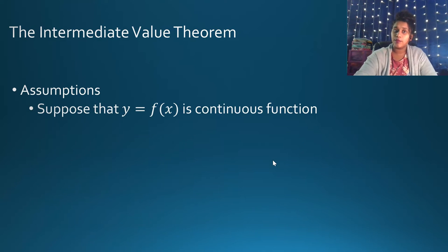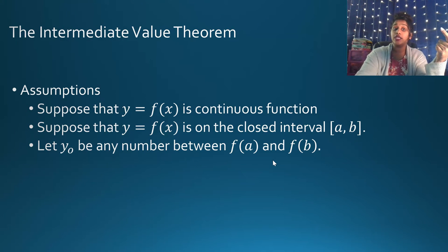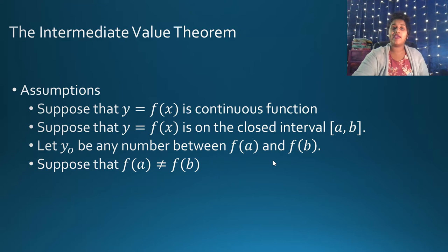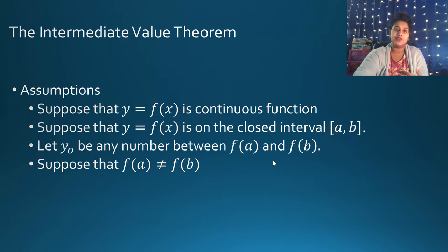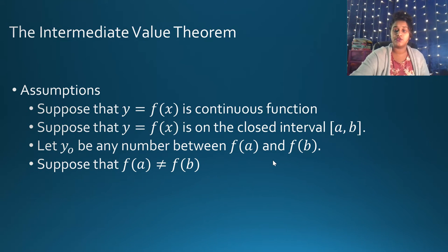We have some assumptions to make. We assume that it is continuous, we assume that it is closed. When we say assume, we say what are we looking for? That's what I mean by an assumption. We can assume that there must be numbers between F of A and F of B, because if it's continuous, then there must be some number between there, and F of A cannot equal F of B.